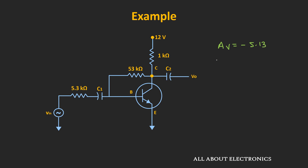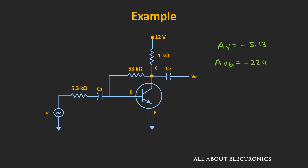So this is the overall voltage gain of the given circuit. Notice that Avb is large at −224, but because of the large series resistor, the overall voltage gain reduces significantly. If the input impedance of the amplifier were high, it would not have affected the overall voltage gain as much. In such cases, to achieve the desired voltage gain or for impedance matching, multiple amplifier stages can be cascaded. In upcoming videos, we will learn more about multistage amplifiers.